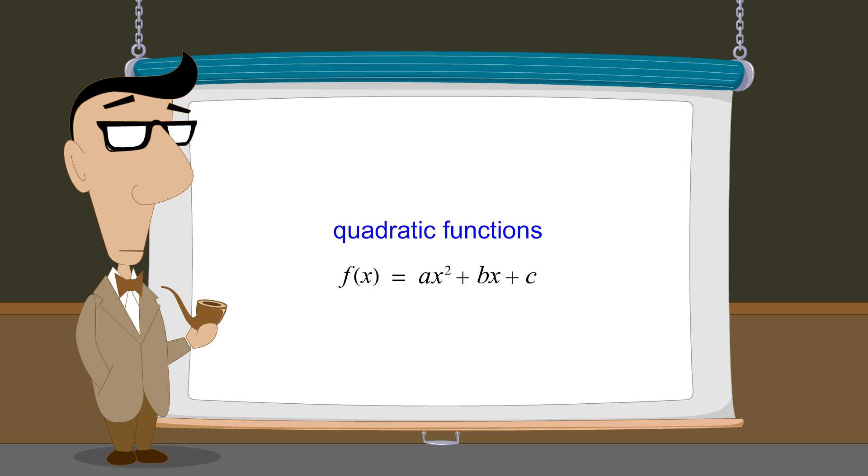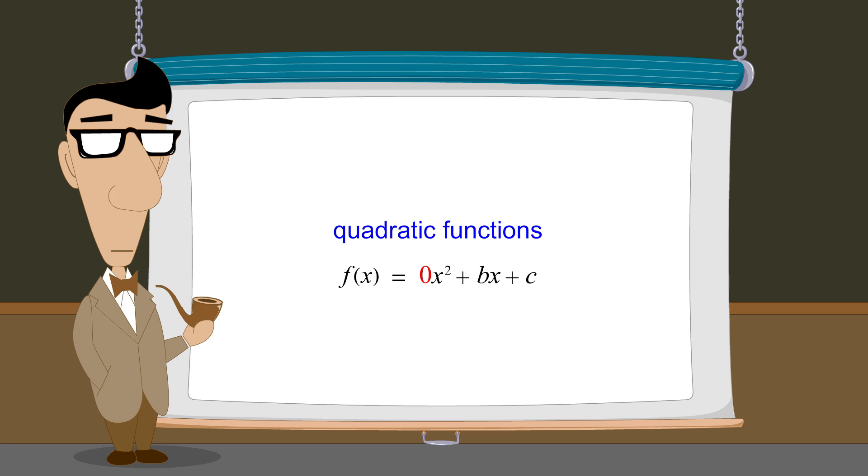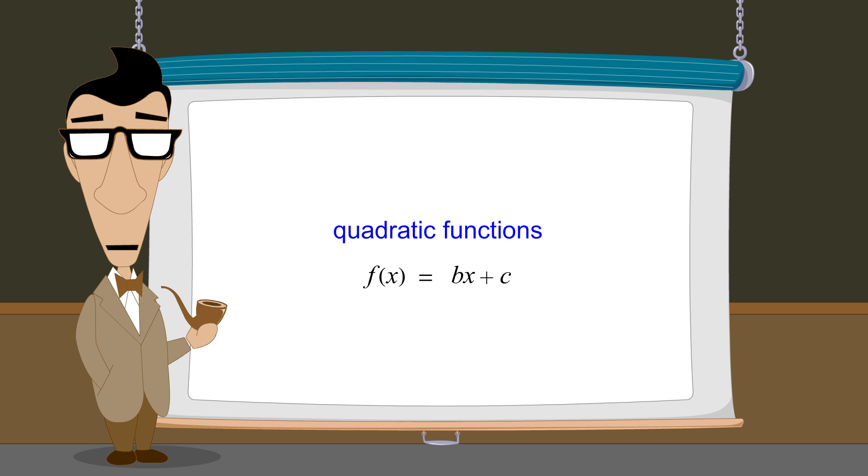In general form, the constants b and c can have any values positive, negative, or zero. However, if the constant a is zero, then the function has no x-squared term and is therefore linear, not quadratic.